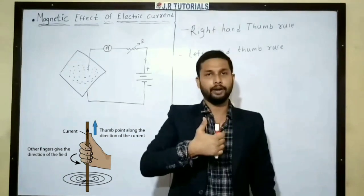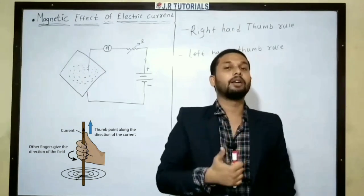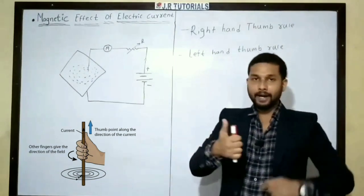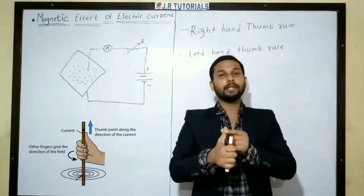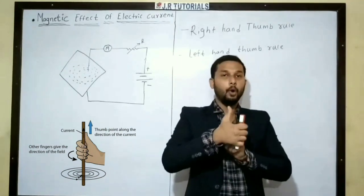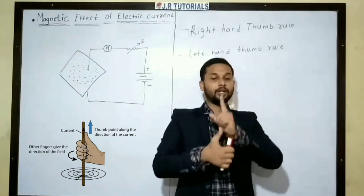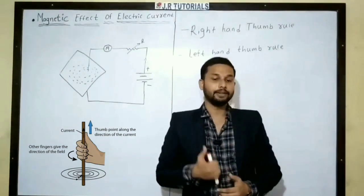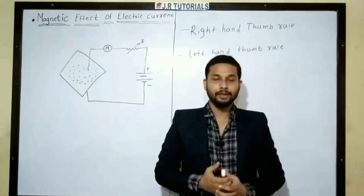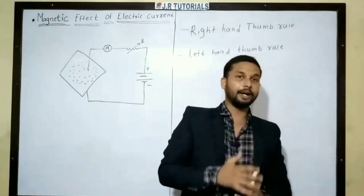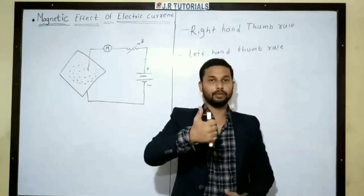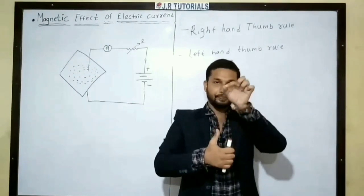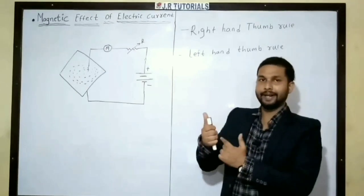We have a thumbs-up for the right hand rule. The right hand rule relates to the magnetic effect. We are going to determine the direction of the magnetic field. If we have any conductor, we need to know which is the electric current direction and which is the magnetic field direction. The thumb points in the direction of the current, and the curved fingers indicate the direction of the magnetic field.